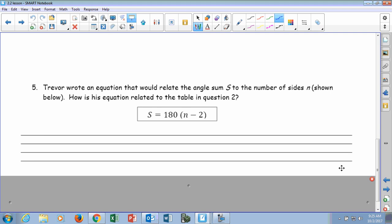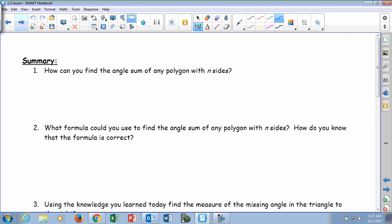Raise your hand instead of just spouting out the answer. So let's go to summarize then. It says, how can you find the angle sum of any polygon with n sides? Without using the formula, how can we just say it?